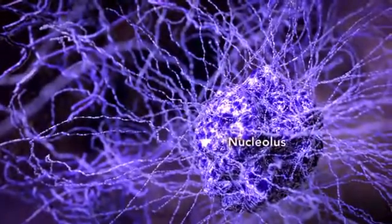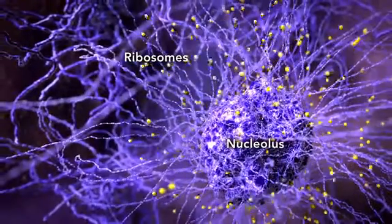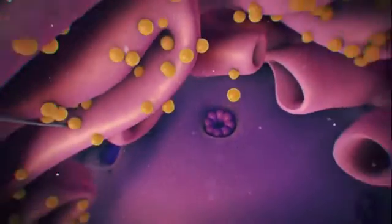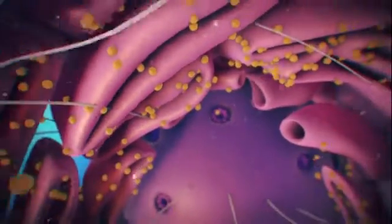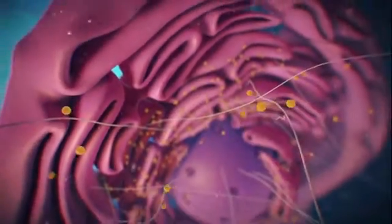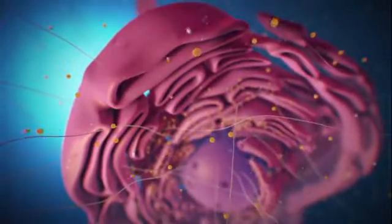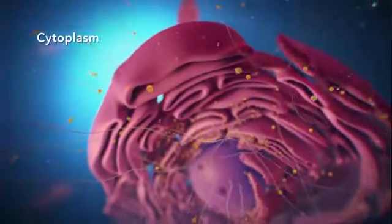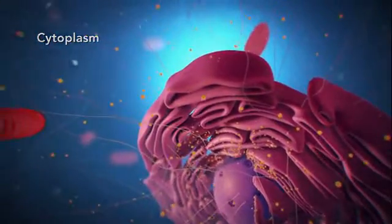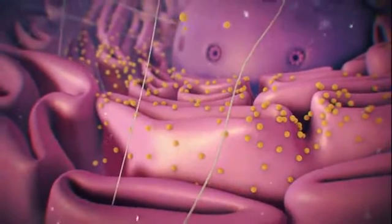After ribosomes leave the nucleus, they will have the important job of synthesizing or making proteins outside the nucleus. The ribosomes and the rest of the organelles float around in cytoplasm, which is the jelly-like substance. Ribosomes may wander freely within the cytoplasm or attach to the endoplasmic reticulum.